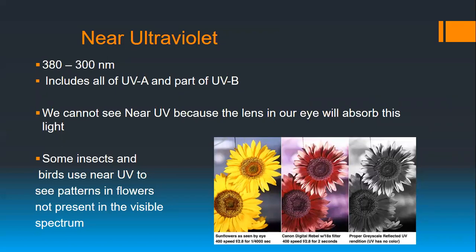We can't see near UV because the lenses of our eye and cornea absorb ultraviolet light, but some insects and birds have some transparency to near ultraviolet. These sunflower pictures — one taken normally and one with ultraviolet film — show that some flowers create patterns visible only to certain insects and birds.